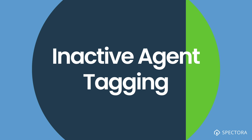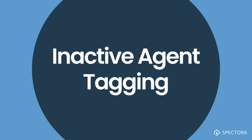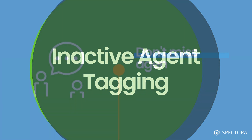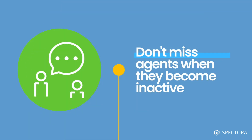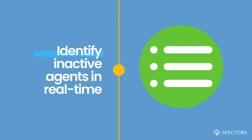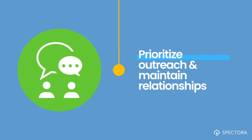Inactive Agents. The third and equally important tag you should set up with auto-tagging is an Inactive Agents Tag. As an inspector, you are juggling responsibilities, relationships, marketing, and back office work — not to mention actual inspections. It's easy to miss the signs of an agent going inactive on you, and that's where Inactive Agents auto-tagging comes in. Using auto-tagging, you can create a tag that marks all of your inactive agents in real time that haven't done an inspection with you over a specific time frame. By automatically identifying these agents, you can prioritize outreach to get them referring business back to you again, or at least keep the relationship going if they're experiencing a lull in business.